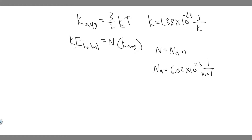Keep in mind K is Boltzmann's constant and T is temperature. The total translational kinetic energy, which we solve for in the second part, is the number of molecules multiplied by the average translational kinetic energy.